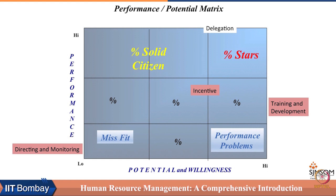The second category of talent can be called performance problems — people who are high on potential and willingness but are not able to perform well. These are generally found among those who are earlier in their employment life cycle, found in large percentage at entry level or front-line management. These people need training, coaching, and mentoring. Training in particular can be very useful for this category of talent, which is high on potential and willingness but low on performance.